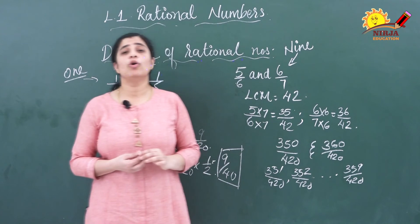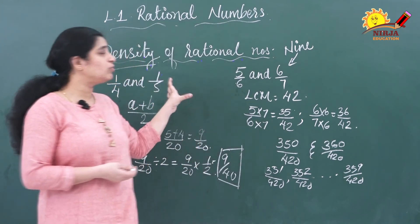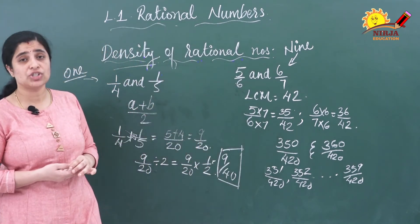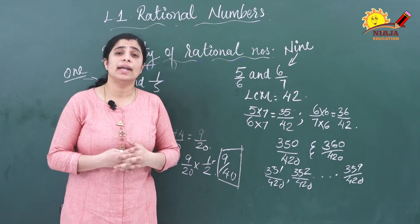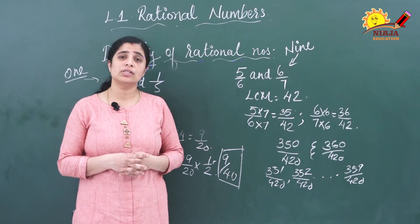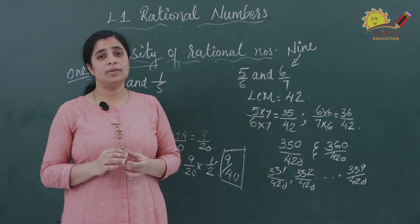I hope all of you have understood how to find rational numbers between two given rational numbers. Thank you all and have a nice day.